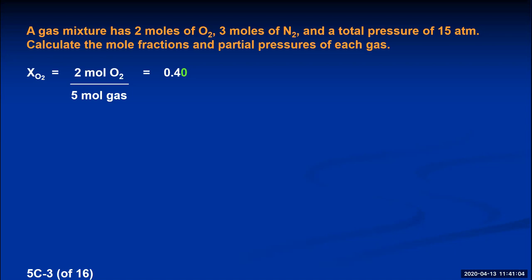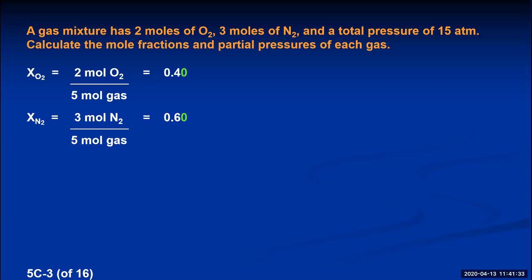For nitrogen, we take 3 moles divided by 5 total moles, giving a mole fraction of 0.6 — meaning 60% of the moles in the container are nitrogen. Notice that 40% and 60% add up to 100%, so mole fractions add up to 1. Once you've calculated the mole fraction of oxygen as 0.4, you know nitrogen must be 1 minus 0.4, which is 0.6.